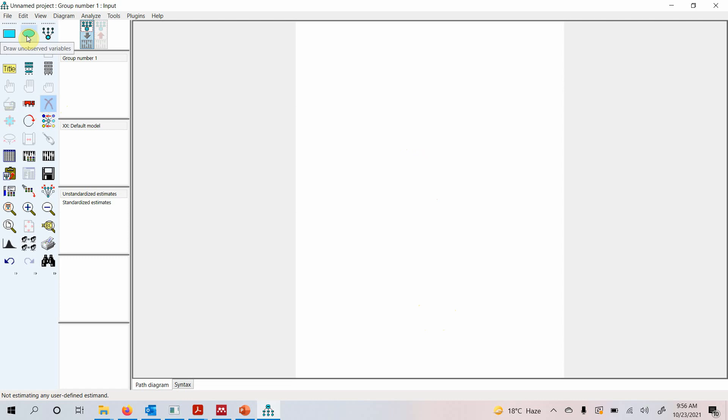In order to draw unobserved variable, select unobserved variable, you can click it and it will draw the shape. Or if you want to change the size, just leave your left mouse button clicked and then drag and drop.